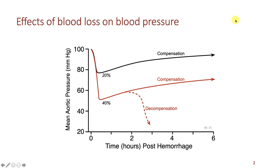In this slide I want to show you the effects of blood loss on blood pressure. In the top graph we're showing the effects of a 20% loss of blood occurring over about a 10-minute period. We see a fairly rapid decline in arterial pressure down to about 75 millimeters of mercury. And then the blood loss is stopped, and if you follow the mean aortic pressure over time, you'll see that it gradually recovers. After about six hours it's recovered to more than 90 millimeters of mercury.